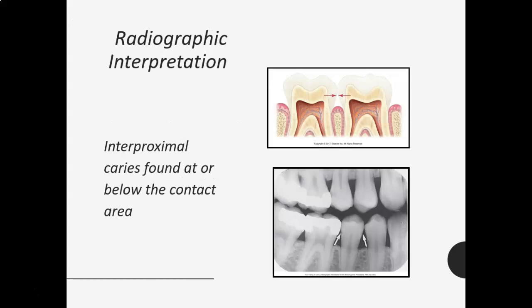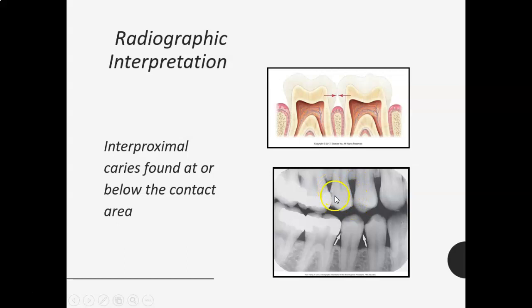For radiographic interpretation, interproximal caries are found at or below the contact area — right where the teeth are touching or below would be considered interproximal caries, or apical to the contact.